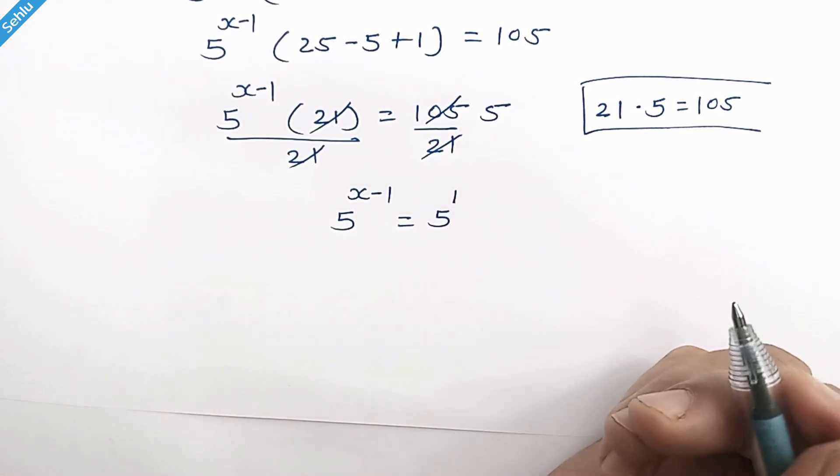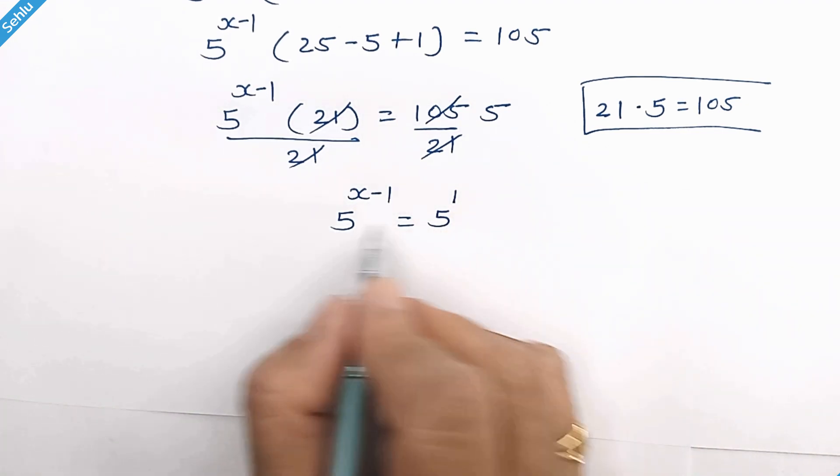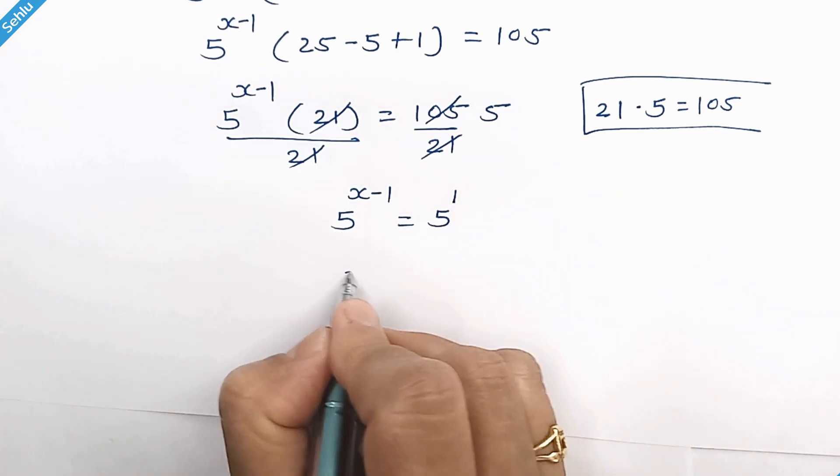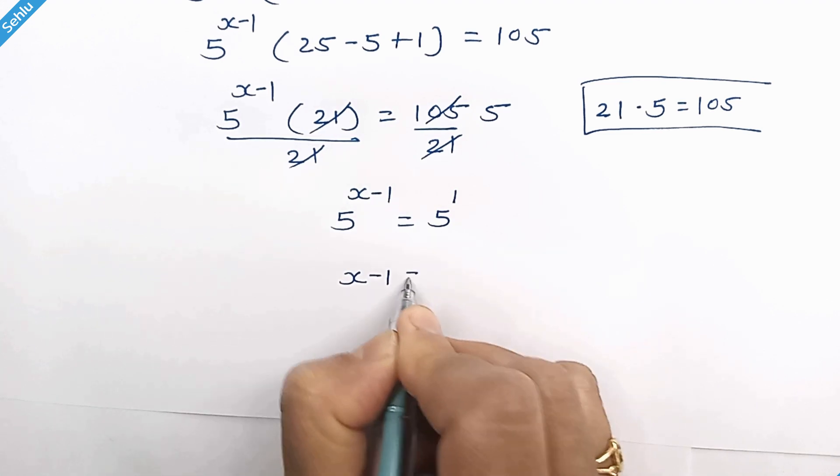1 is the default exponent. Now it's the same base on both sides, so we can equate x minus 1 equals 1.